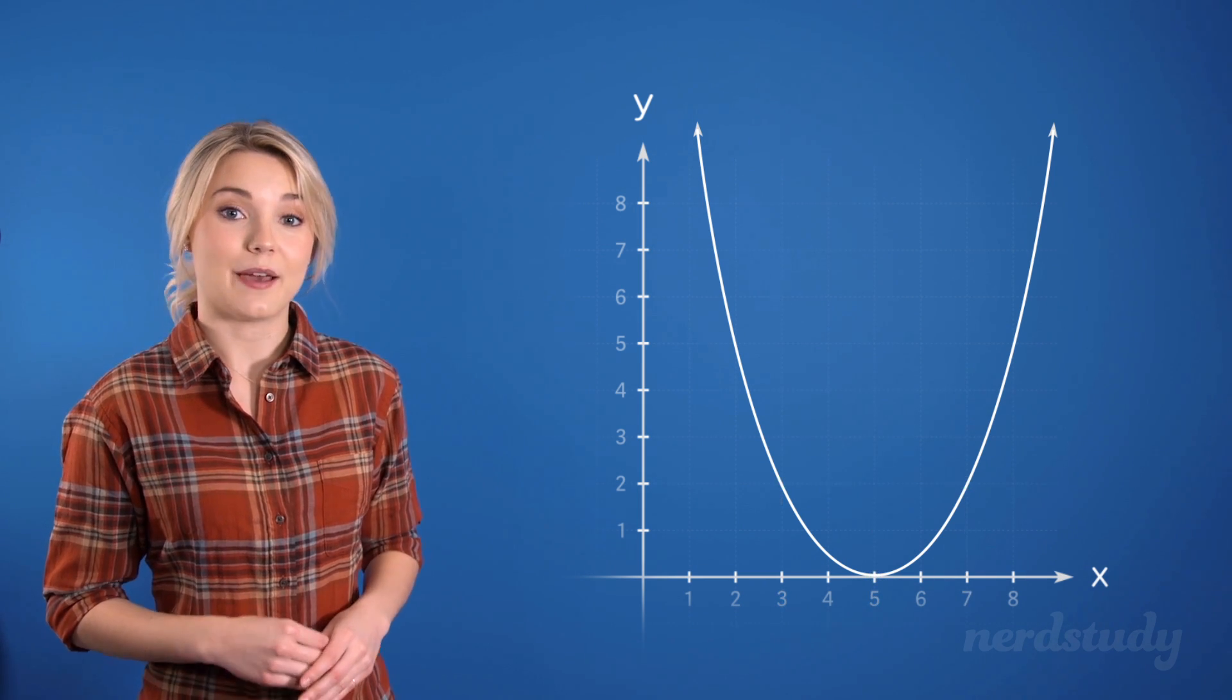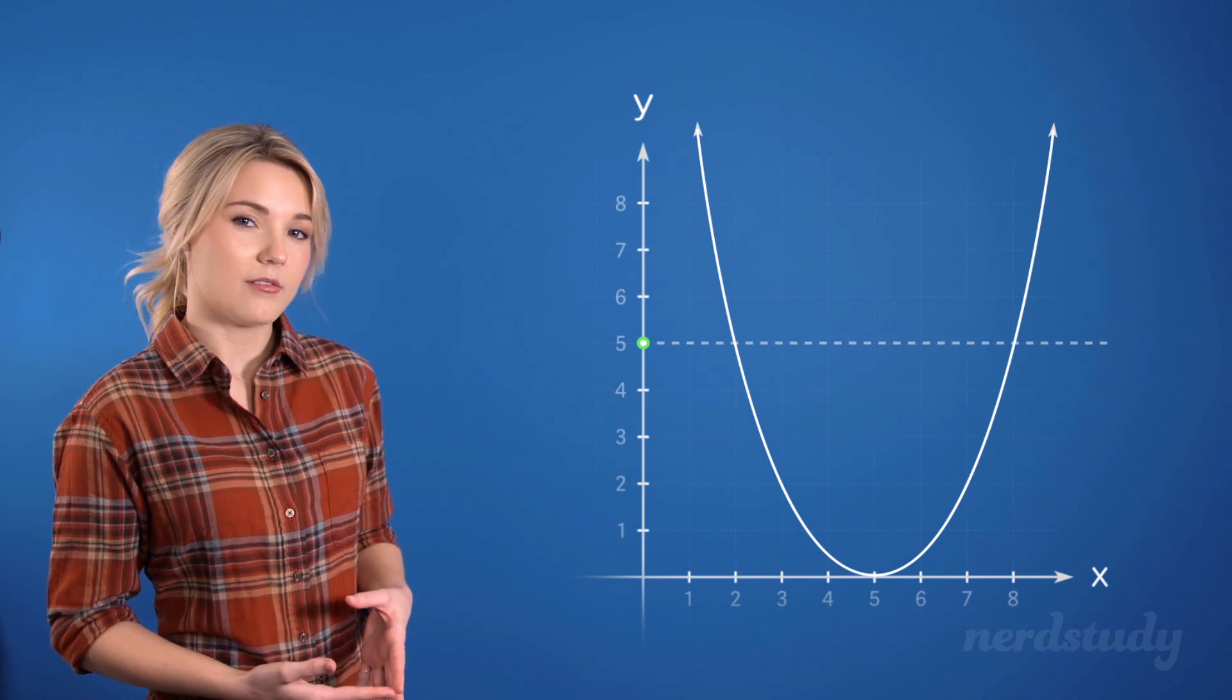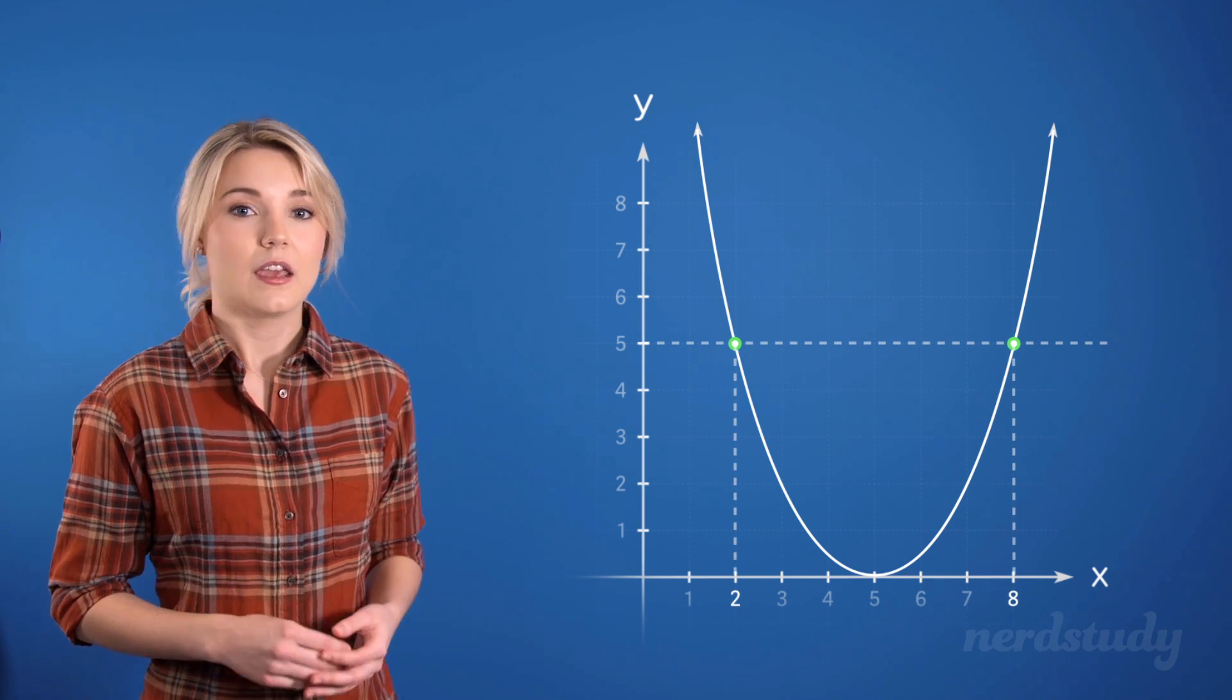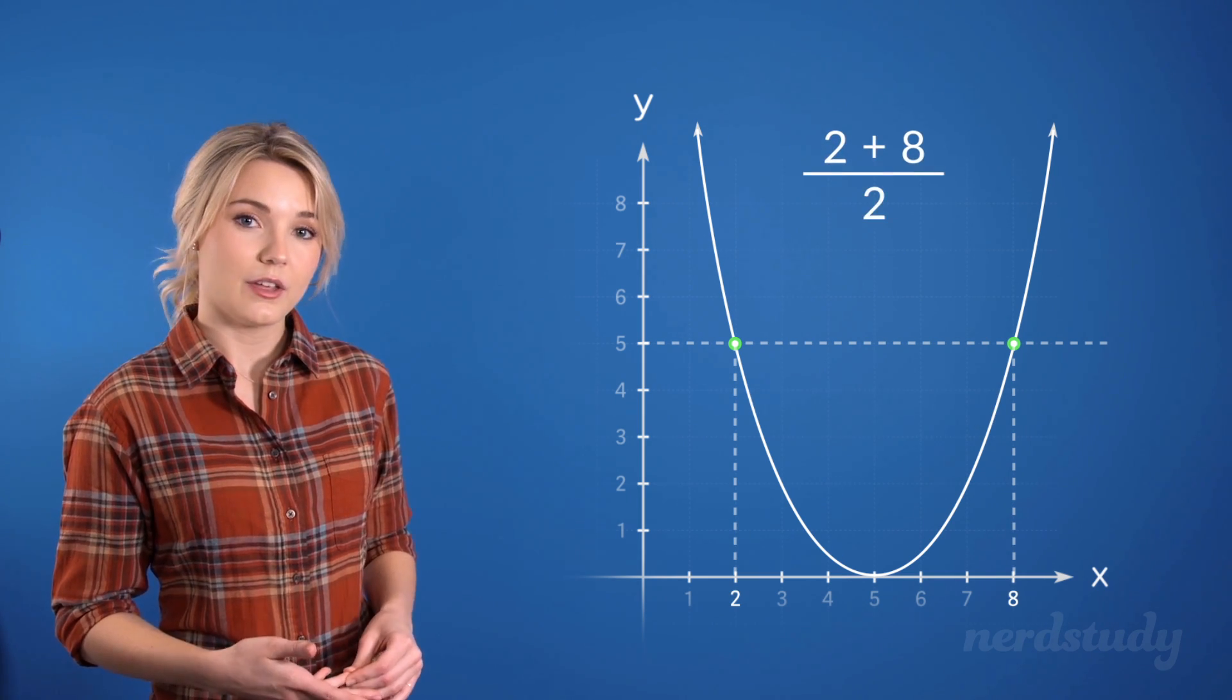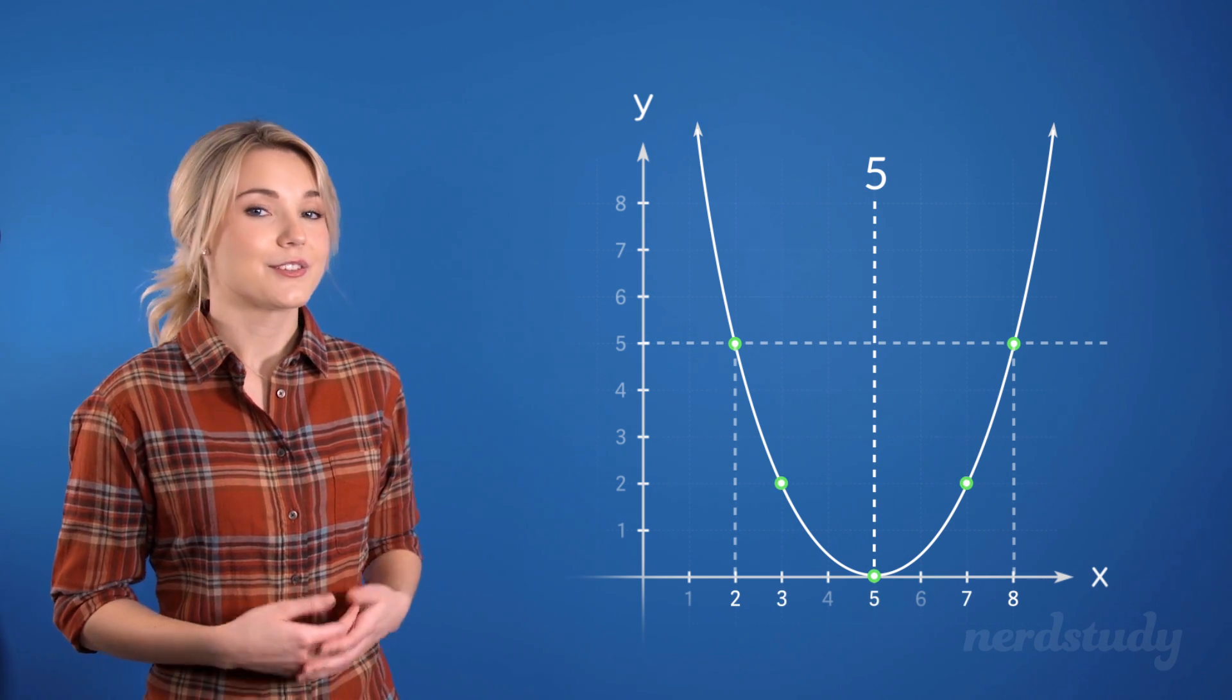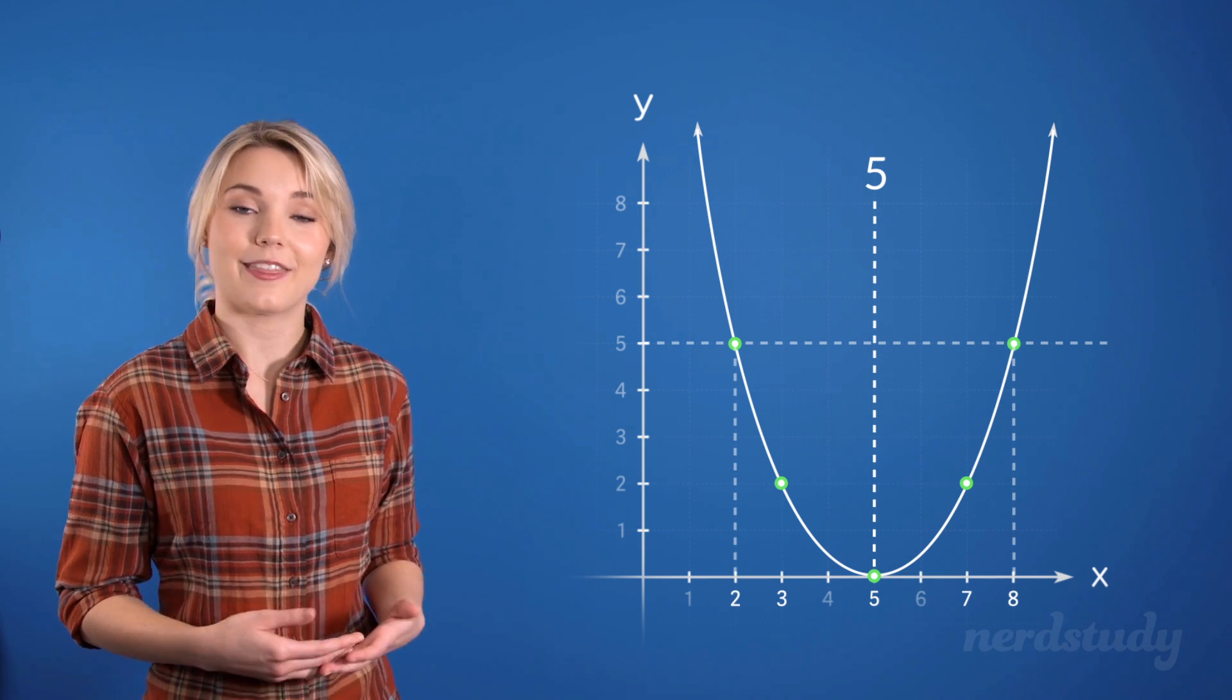What I want you to notice is one step further. Notice how we could have looked at a different y value, and again we'd be looking at two different points on the graph that satisfy this y value. These two values have two x values, where if you add them and divide them by 2, you'd get the same x value of the vertex as you did with the previous two points. So in light of this idea, let me show you how to perform partial factoring with the help of an example.